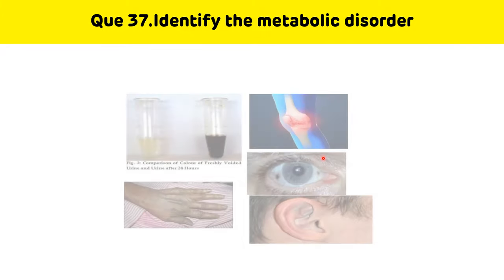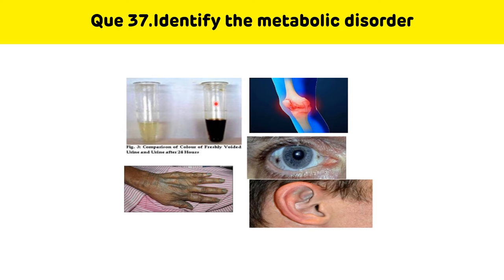Identify the metabolic disorder. There is black color urine and black color deposition in connective tissues, soft tissues, and cartilages. This is a case of alkaptonuria, which occurs due to the deficiency of homogentisic acid oxidase enzyme. There is black discoloration of urine and deposition of alkapton bodies in the pinna of the ear, soft tissues, and cartilage.